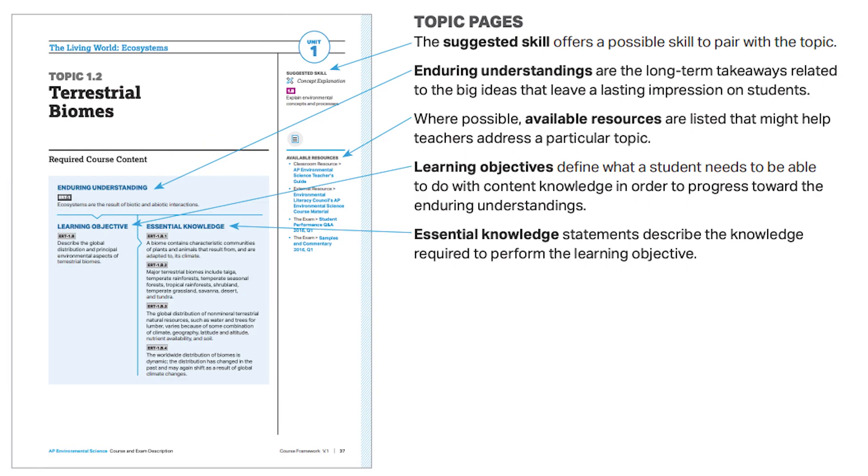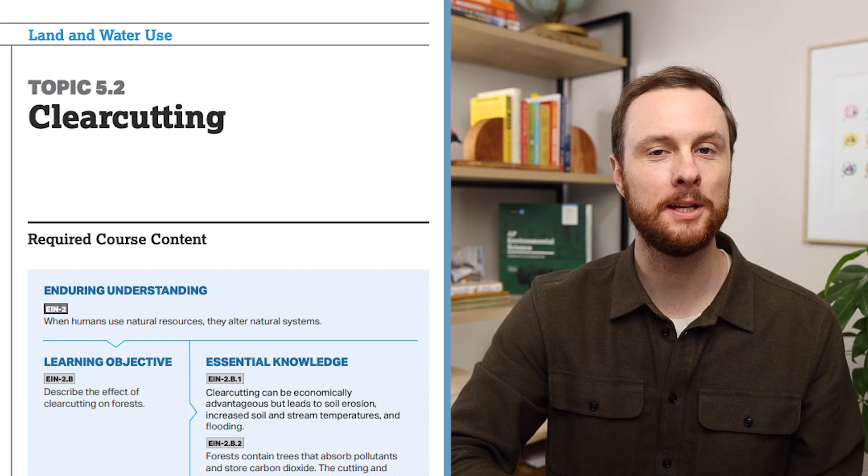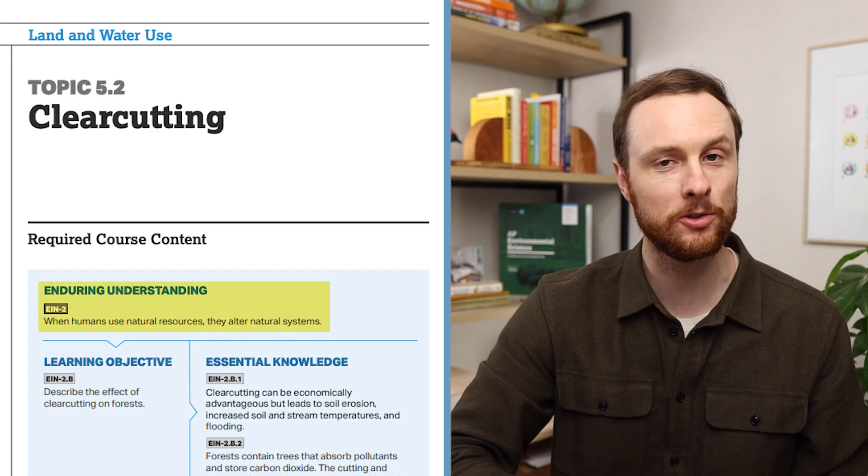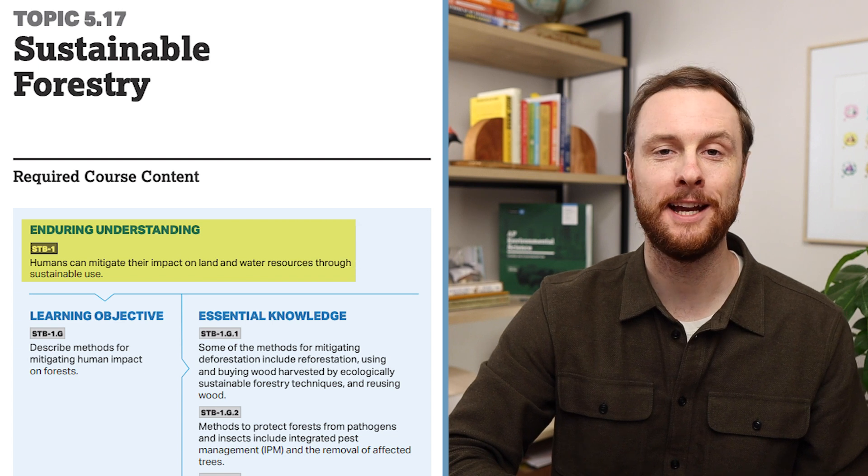I need to point out that I didn't just pull these questions out of thin air. The College Board actually provides these kinds of questions that they call enduring understandings for each topic. For every topic in Unit 5, the enduring understanding is either: when humans use natural resources, they alter those systems, or humans can mitigate their impact on land and water resources through sustainable use. These frames are really just built off of those enduring understandings. Go ahead and pause the video now and click the link in the video description to print or use a fillable PDF version of this Unit 5 frame.